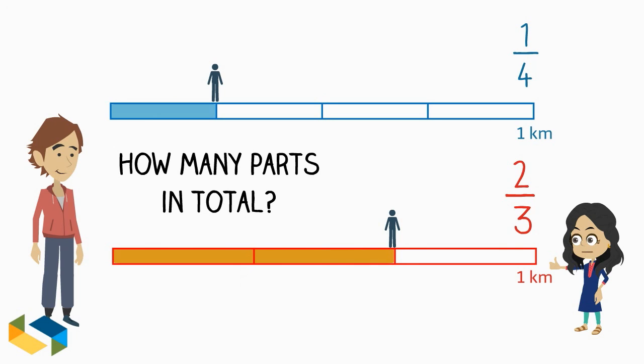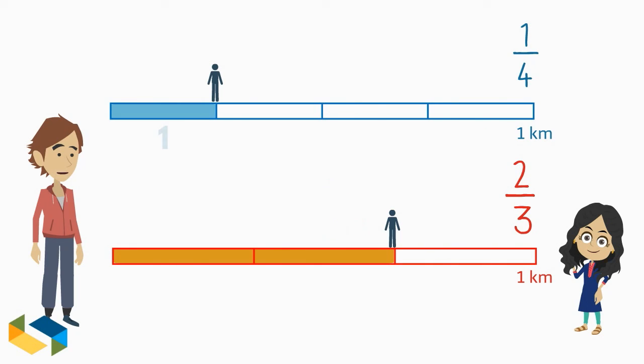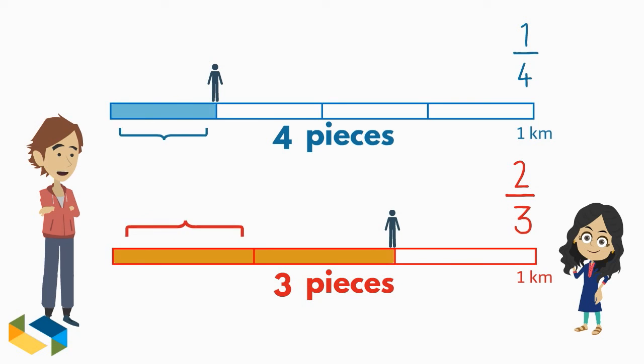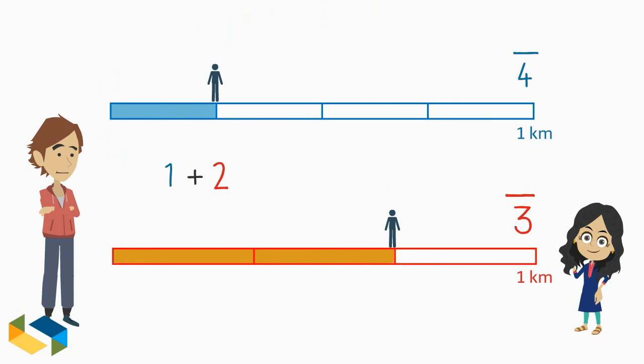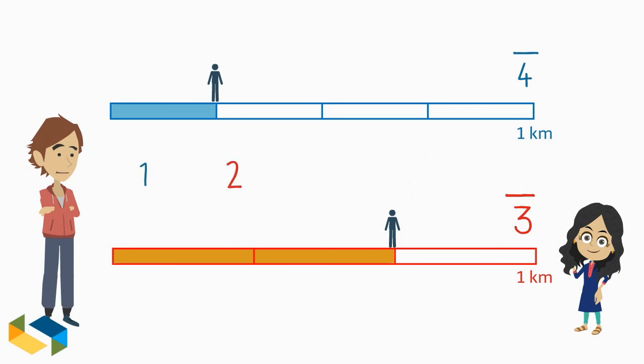I got it, just add the one and two here to get three as the answer. No Tanya, we cannot do that. If you see carefully, up here we divided the kilometer into four pieces, while out here we have only three pieces to form a kilometer. The relative size of these parts is not the same, so adding these parts together would be similar to adding unlike units, which will not be correct.